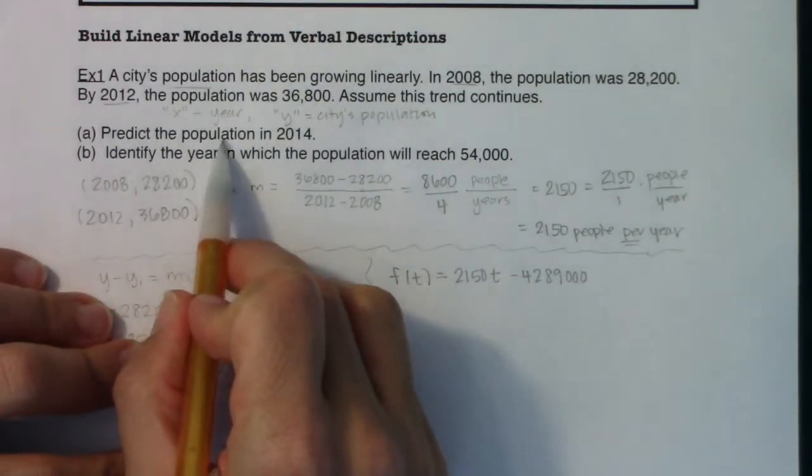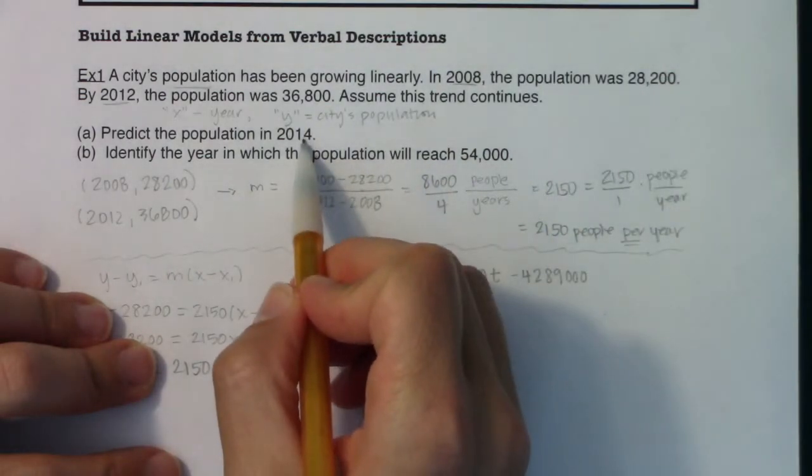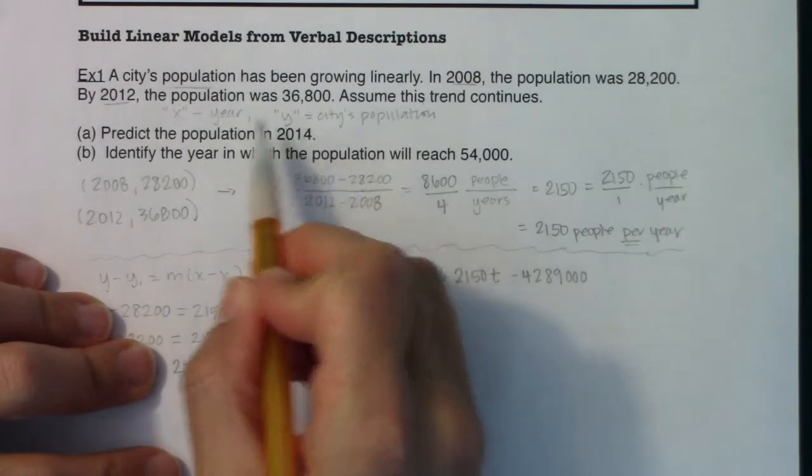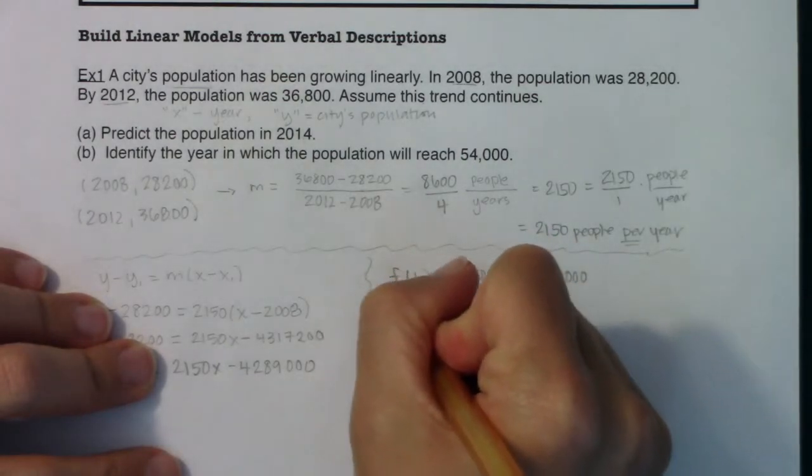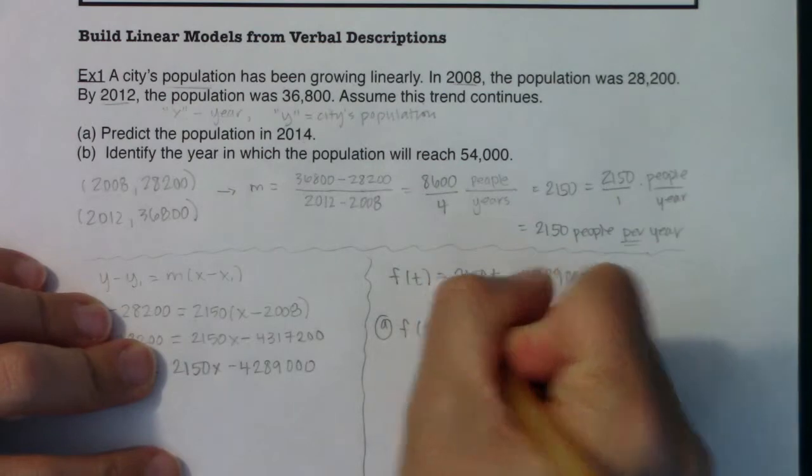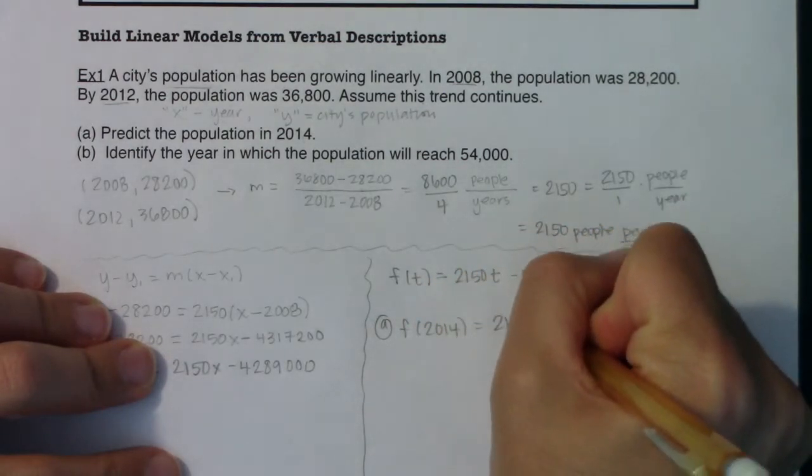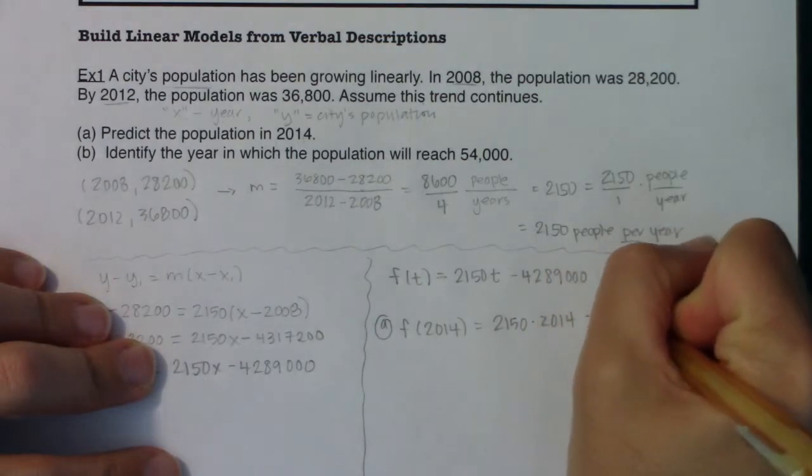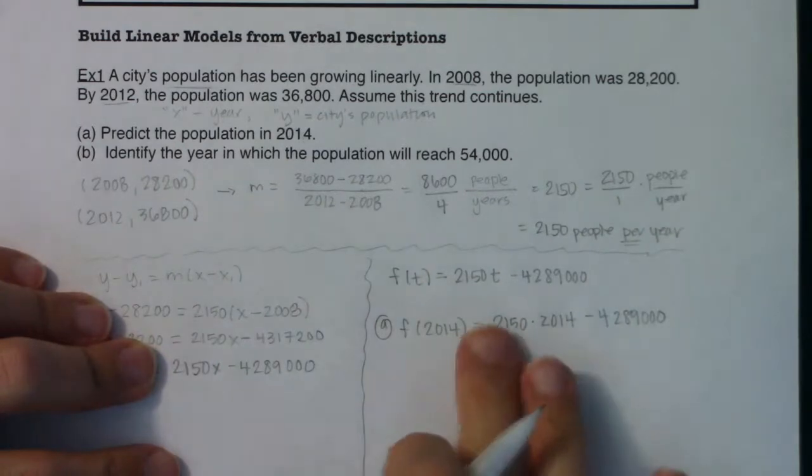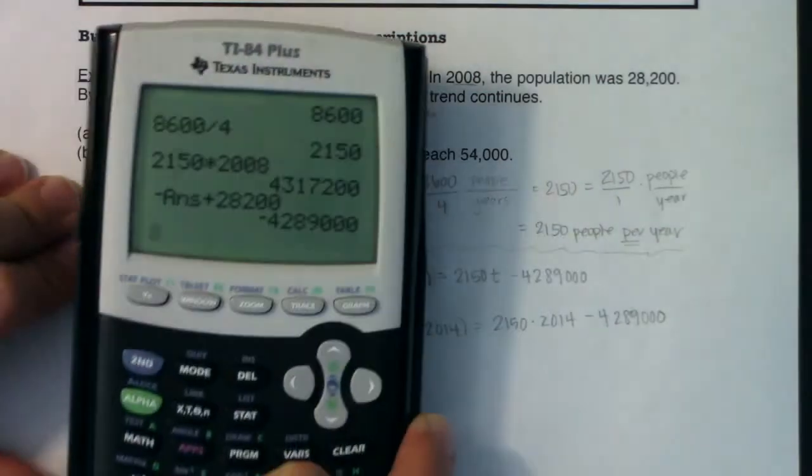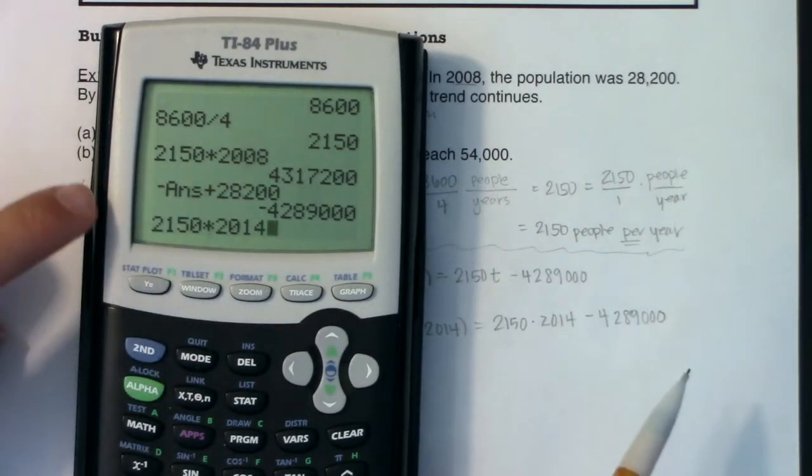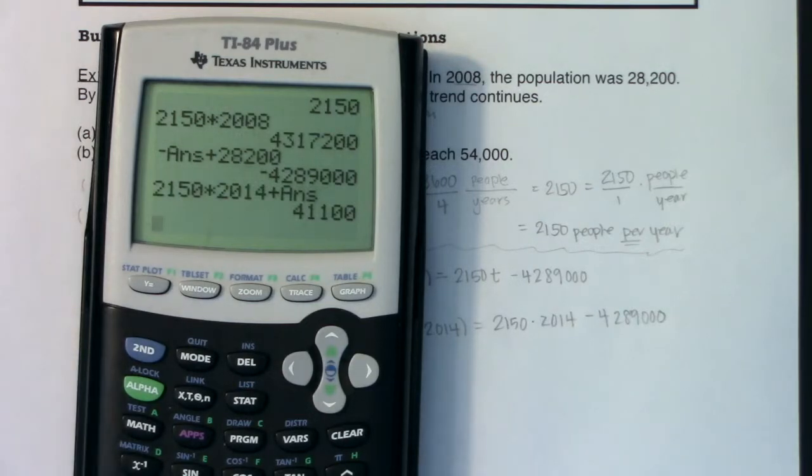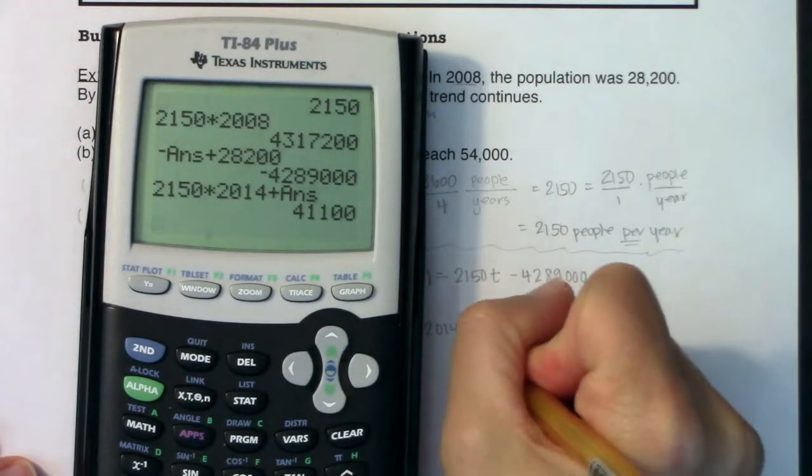So the first thing I see is predict the population in 2014. Well, 2014, is that an X value or a Y value? Well, you can see 2014 is a year, so I'd be plugging it in for X. Or since I changed the letter, I'd be plugging it in for T. So I want f(2014). And this would be 2150 times 2014 minus 4,289,000. This will be a large number. And when we subtract it from this number, we might not have too large of a number left over. So let's see. I'm going to do 2150 times 2014. And if I want to subtract this number, I could also just add my answer.